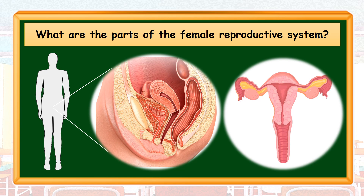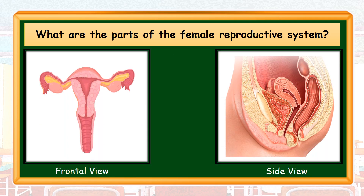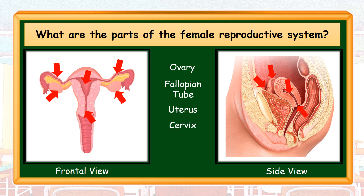This is the female reproductive system. It is located in the middle part of the lower abdomen of a female human body. The different parts of the female reproductive system are: ovary, fallopian tube, uterus, cervix, and vagina. They are all located inside the female's body.